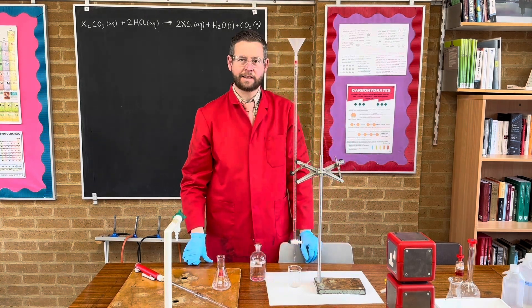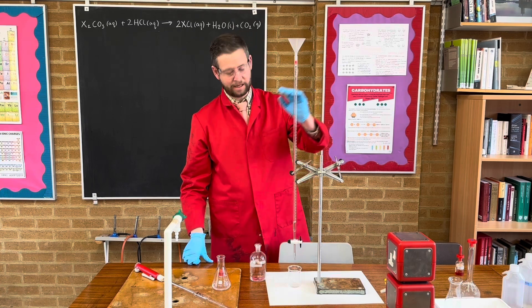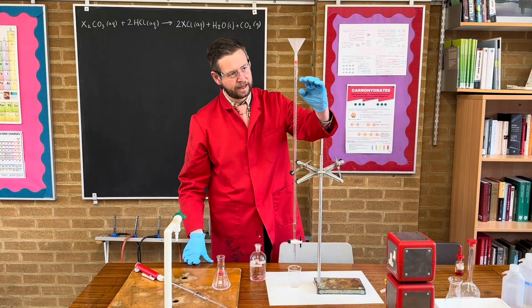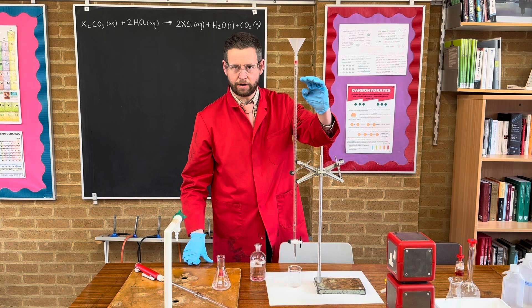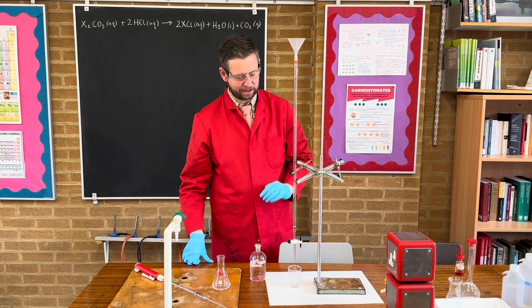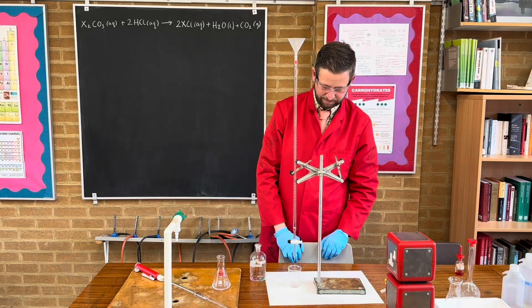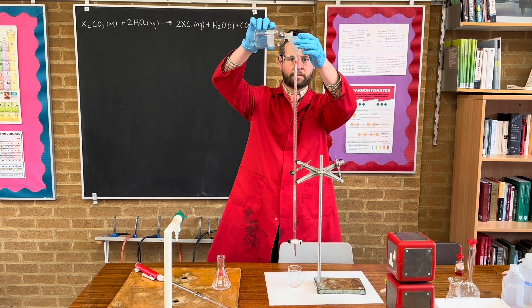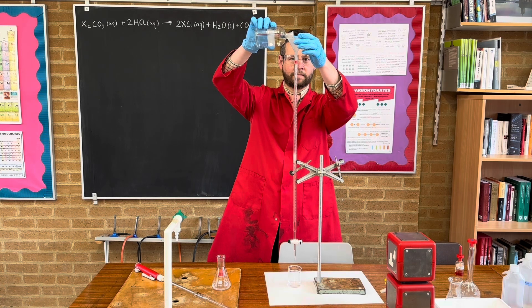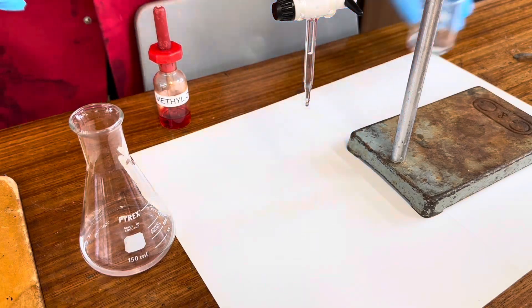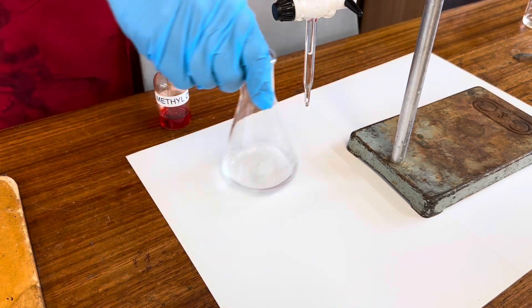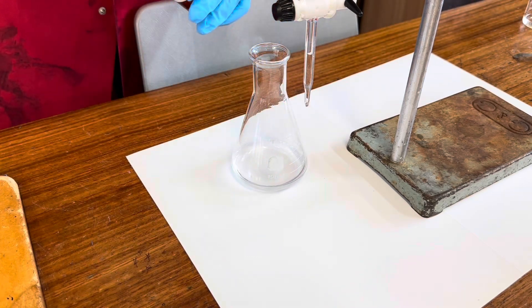Once it has flushed through, we're then going to measure out an amount of this 0.1 molar hydrochloric acid. It needs to be below the zero point on here so that we can measure the change in volume. So now we shall remove this, and here is our analyte.